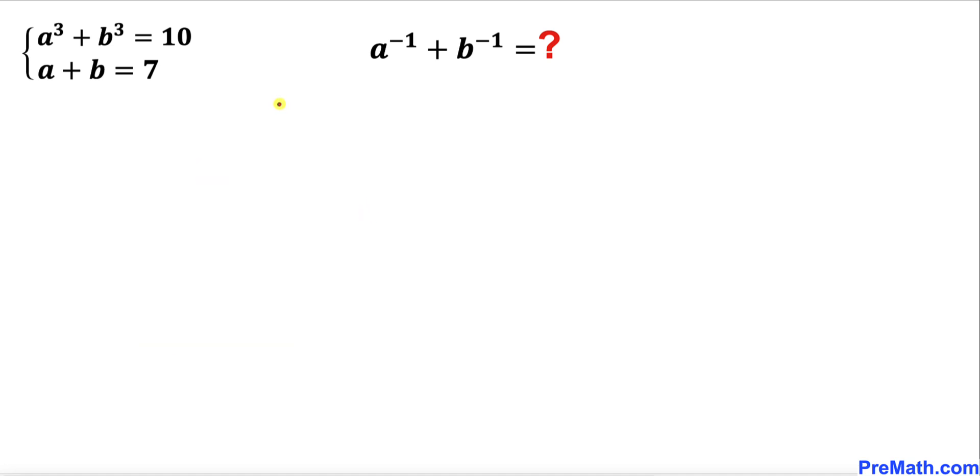So let's go ahead and get started with the solution. Here's our very first step. Let's recall this cubic identity (a + b)³, and here we can see that a + b = 7 from this given equation. So I'm going to replace this one by 7.